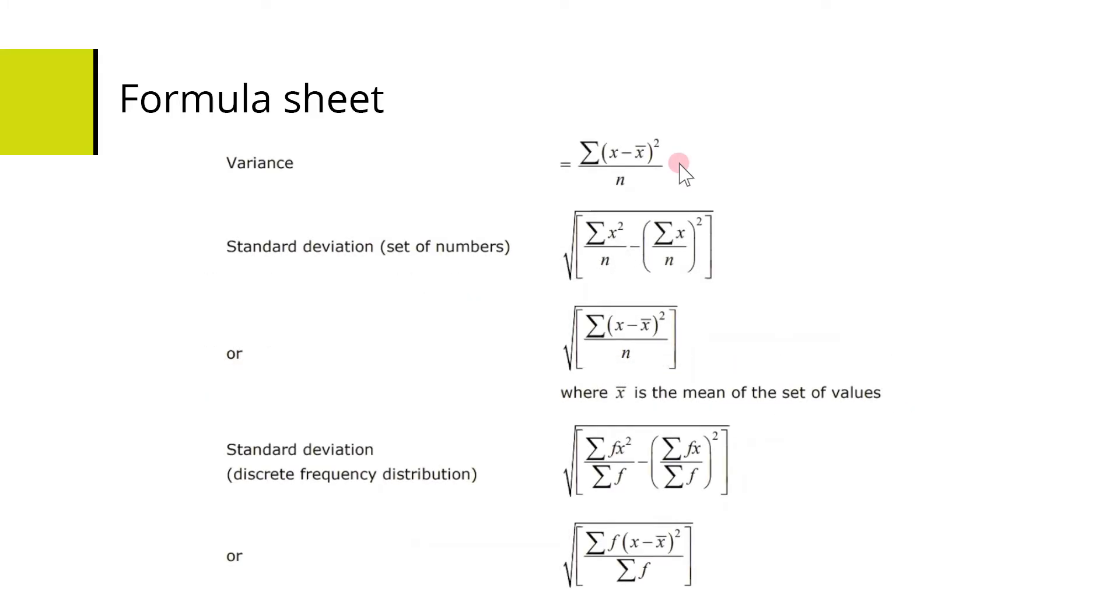There's the variance formula, so each value minus the mean squared, find the sum of that and divide by how many values there are to give you the variance. Then down here, standard deviation is that same formula but square rooted.